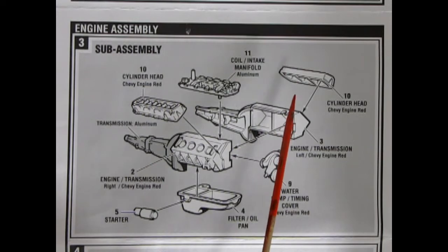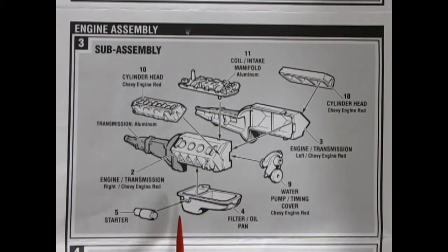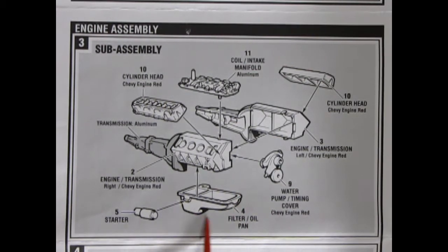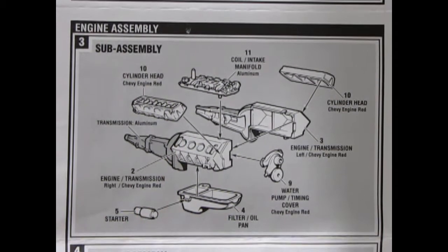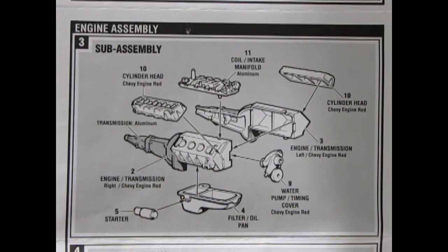Transmission is aluminum. And your cylinder head there. The water pump and timing cover. Chevy engine orange. Your oil filter, and oil pan going on here. And our starter motor. And once these are all assembled, then, of course, you get the sub-assembly for your engine.